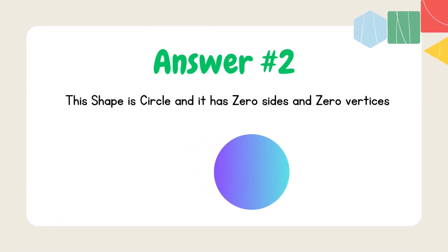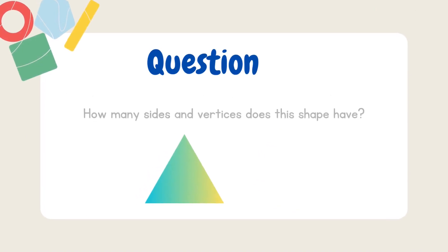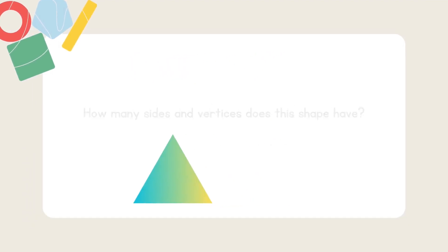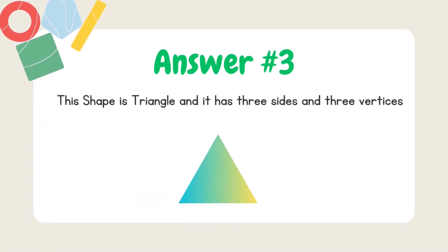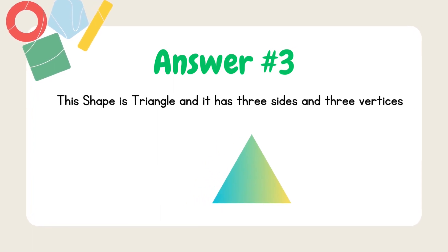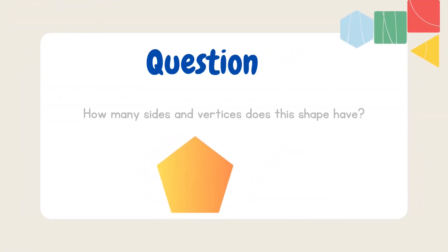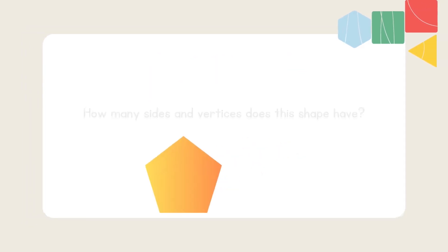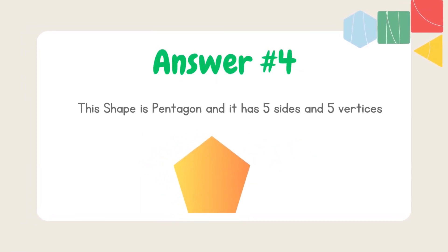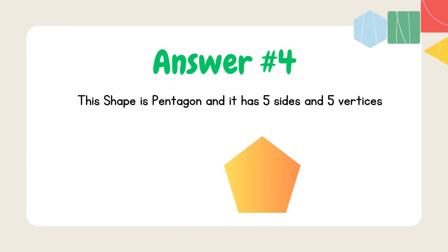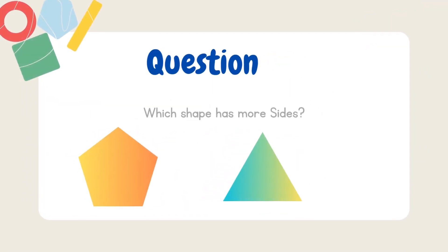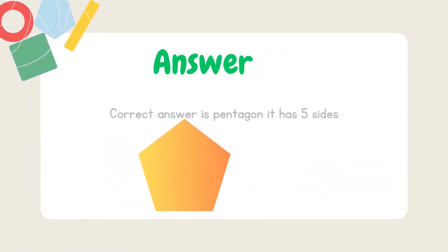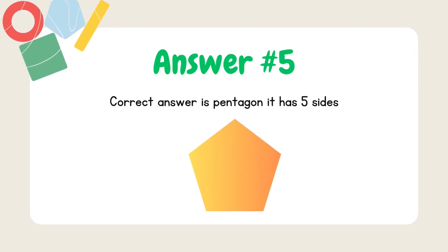How many sides and vertices does this shape have? This shape is a triangle and it has three sides and three vertices. How many sides and vertices does this shape have? This shape is a pentagon and it has five sides and five vertices. Which shape has more sides? The correct answer is pentagon — it has five sides, while a triangle has only three sides.